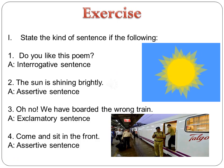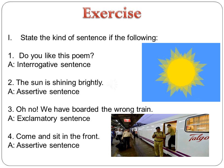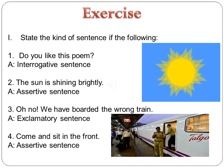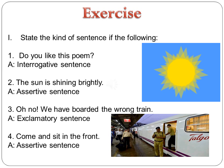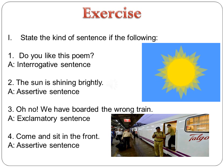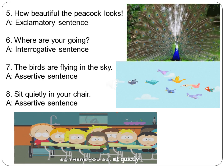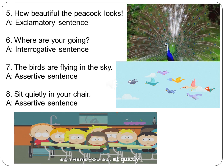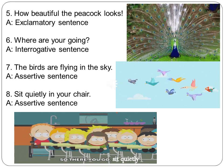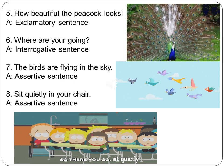Let's do an exercise. State the kind of sentence for the following. 'Do you like this poem?' — Yes, it's an interrogative sentence. 'The sun is shining brightly.' — Yes, assertive sentence. 'Oh no, we have boarded the wrong train.' — Yes, it's an exclamatory sentence. 'Come and sit in front.' — Assertive sentence. 'How beautiful the peacock looks!' — Exclamatory sentence. 'Where are you going?' — Interrogative sentence. 'The birds are flying in the sky.' — Assertive sentence. 'Sit quietly in your chair.' — It is an assertive sentence.